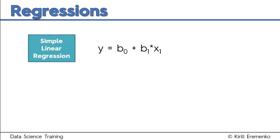A simple linear regression is basically this formula where y equals b0 plus b1 times x. You might recognize this formula from back in high school — it's just a formula of a trend line, a sloped line on an xy axis. Let's go through these variables and coefficients one by one.